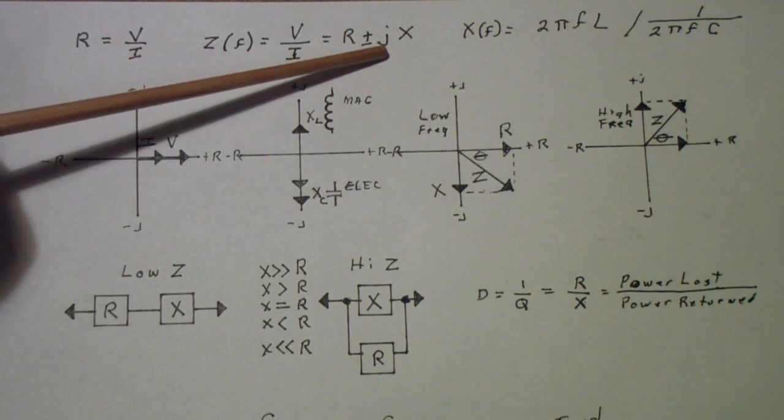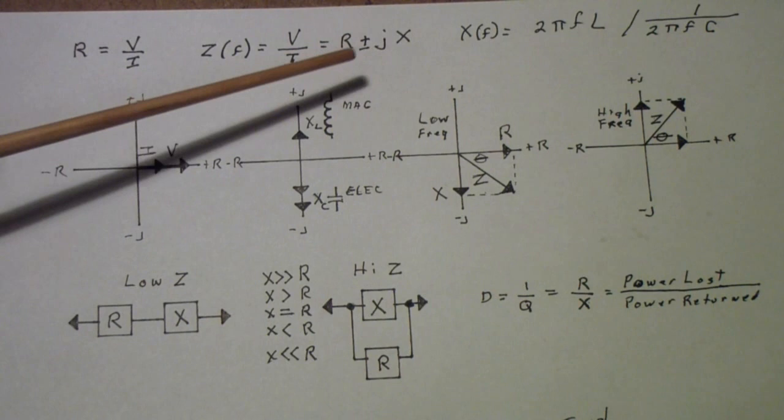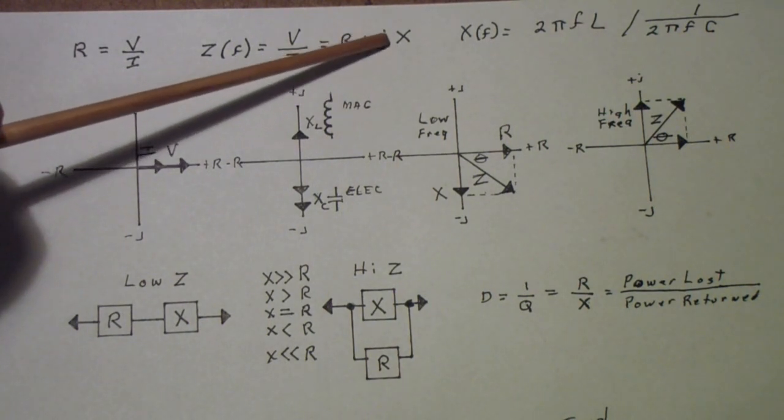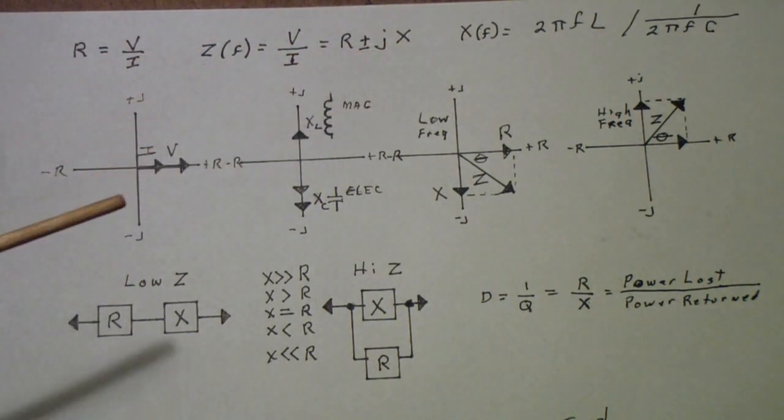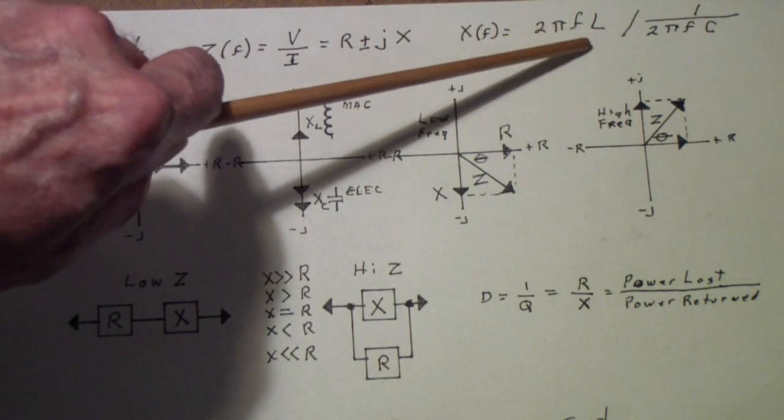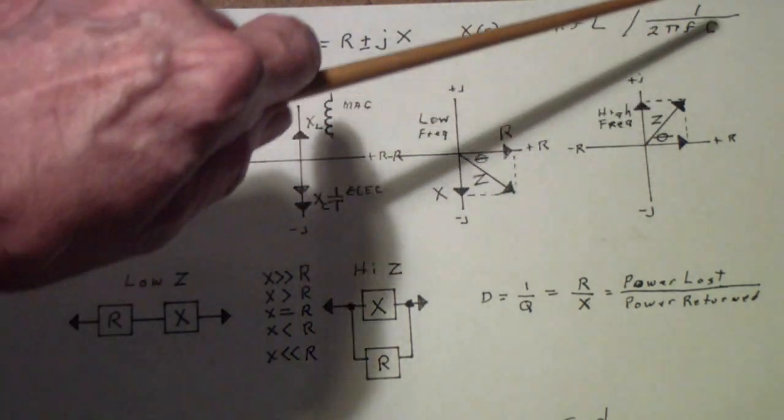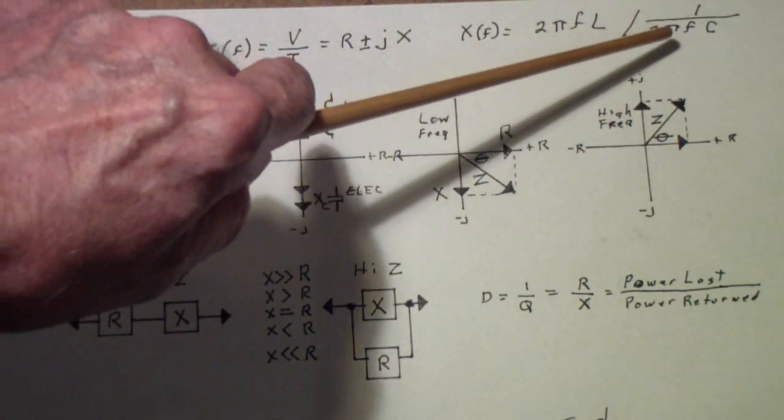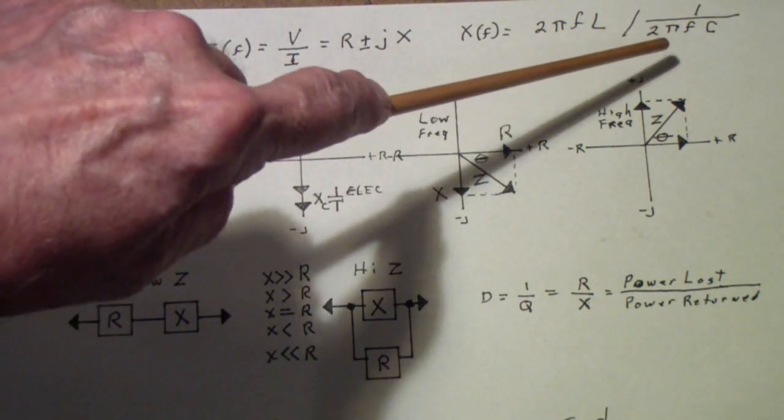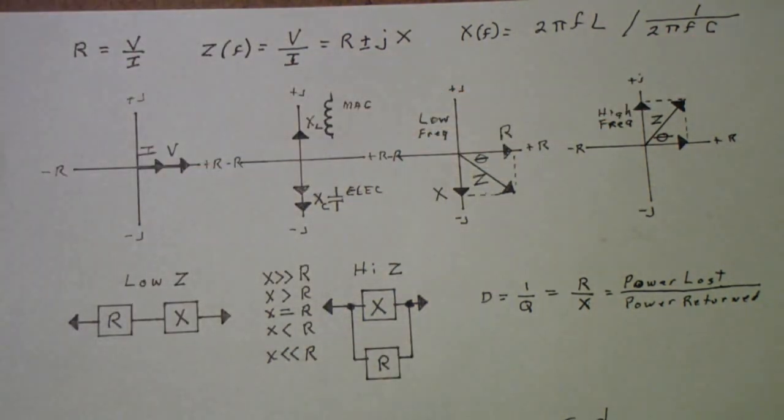Mathematicians use i here, but of course we can't use i because as electronics engineers, we already use i for current. So instead of plus or minus iX, we changed it to j. And the X is defined in terms of frequency. For an inductor, it's 2πfL. That is 2π times the frequency times the inductance. And for a capacitor, it's 1 over 2πfC. Once again, the 2πf is often called omega, the combination. And then C is the capacitance. So those are our fundamentals.